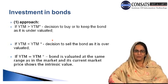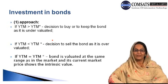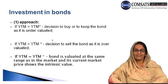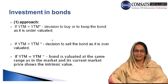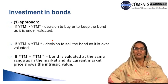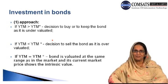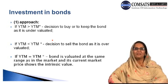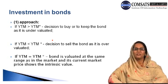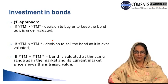If YTM is less than YTM*, the decision is to sell the bond as it is overvalued. The actual yield to maturity is less than what it should be, so it is better to sell the existing bond rather than purchase. If both terms are equal — YTM equals YTM* — the bond is evaluated at the same range as the market and its current market price shows the intrinsic value.